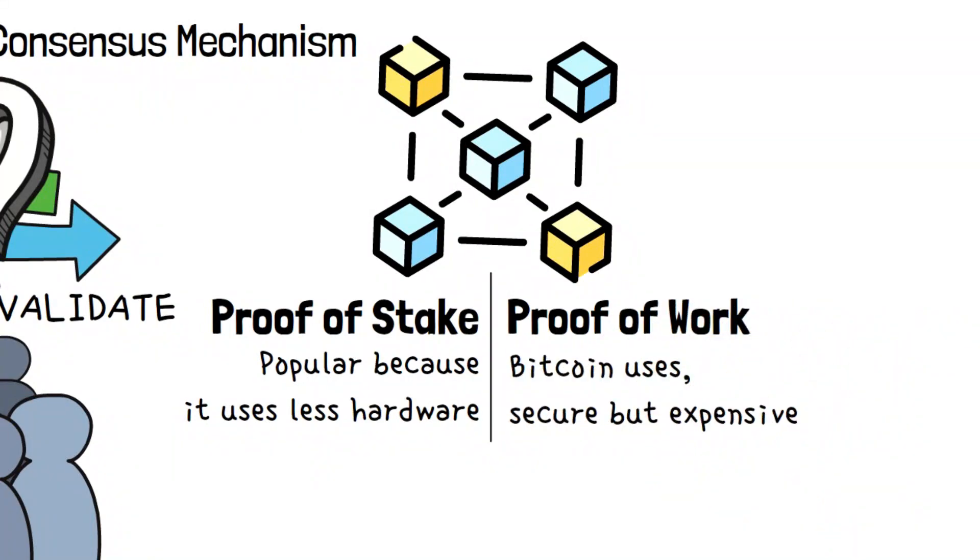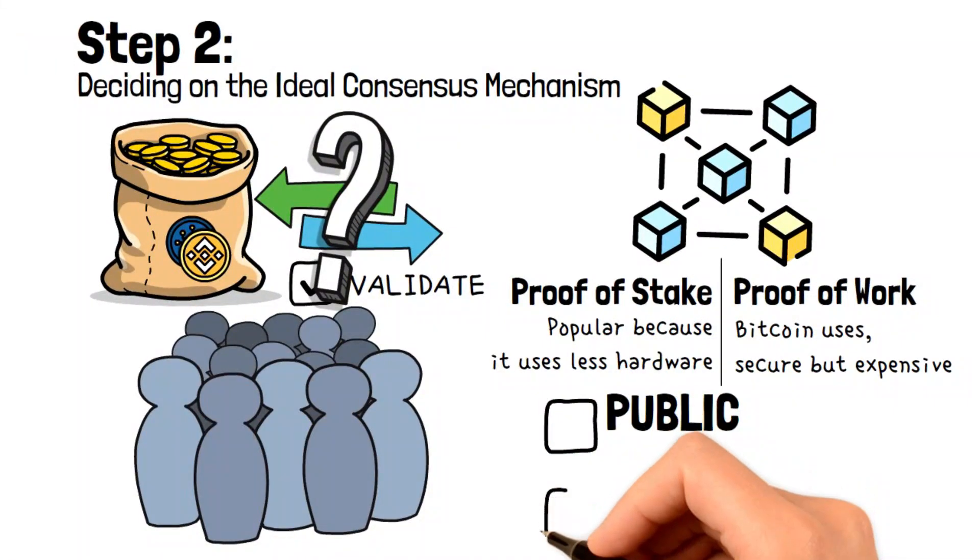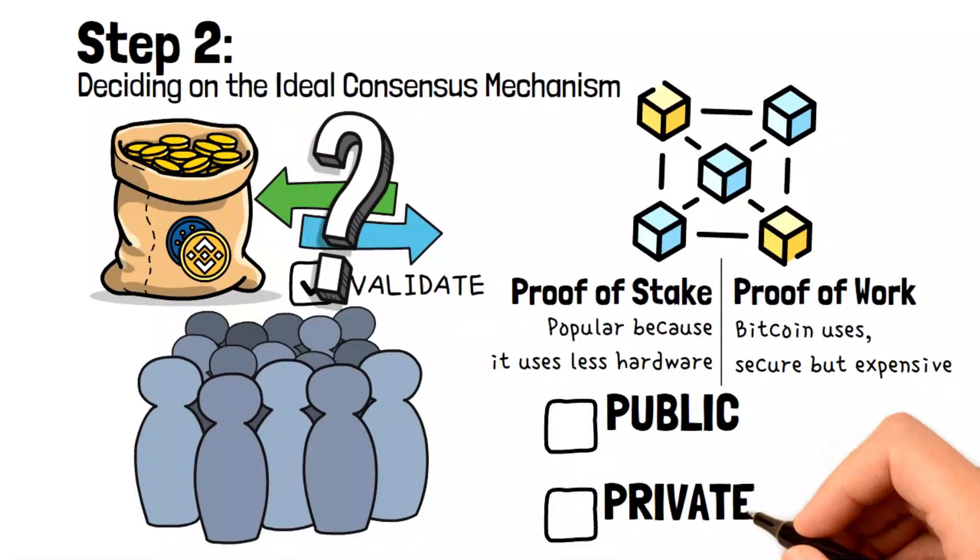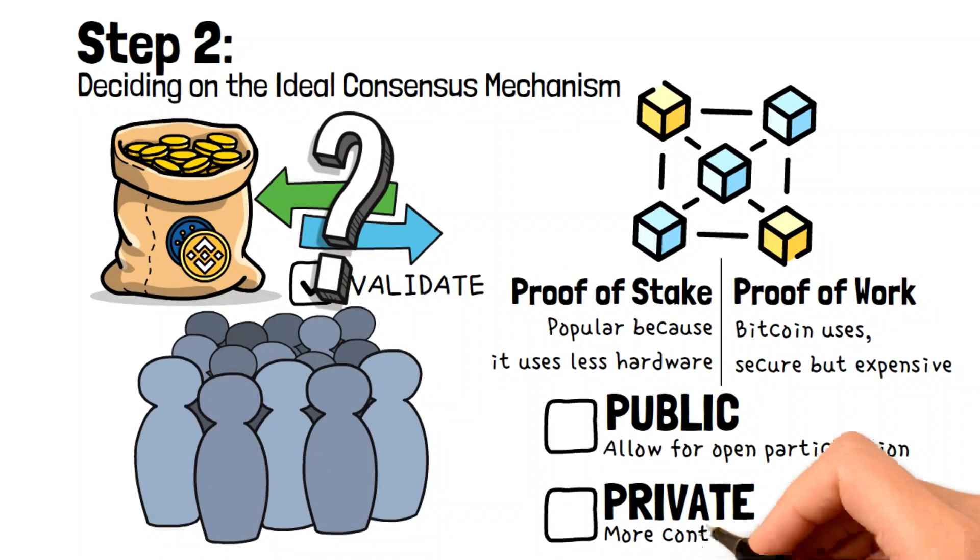The choice between a public, private, or permissionless blockchain is crucial. Public blockchains allow for open participation while private blockchains provide more control and exclusivity, making this a fundamental distinction to assess.